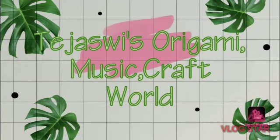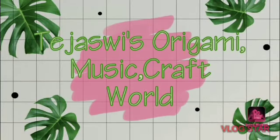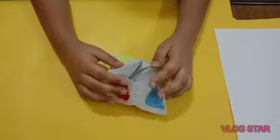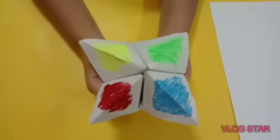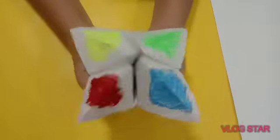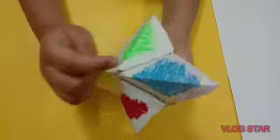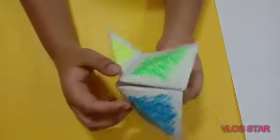This is Origami Music Craft World. Welcome back to my channel. In this video I'm going to show you how to make this fortune teller or the cootie catcher. It has four colors that you can play with.